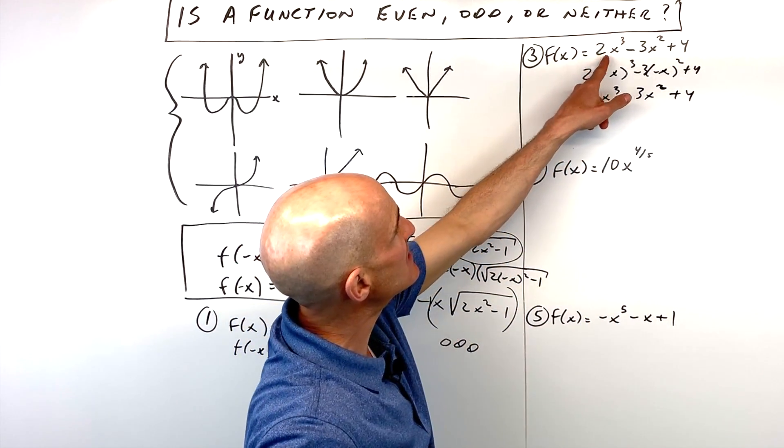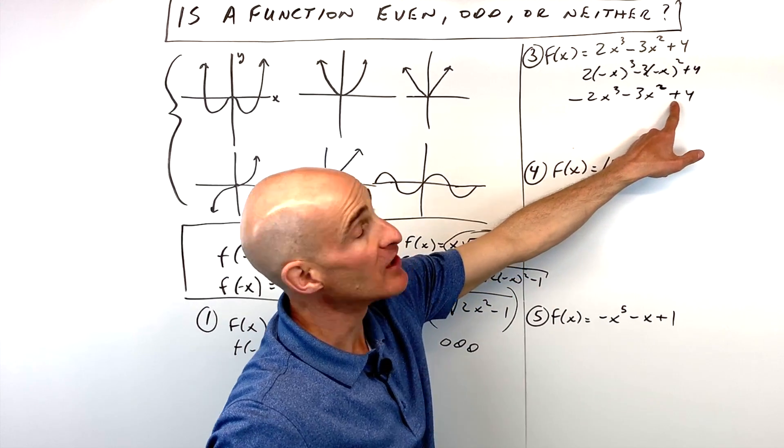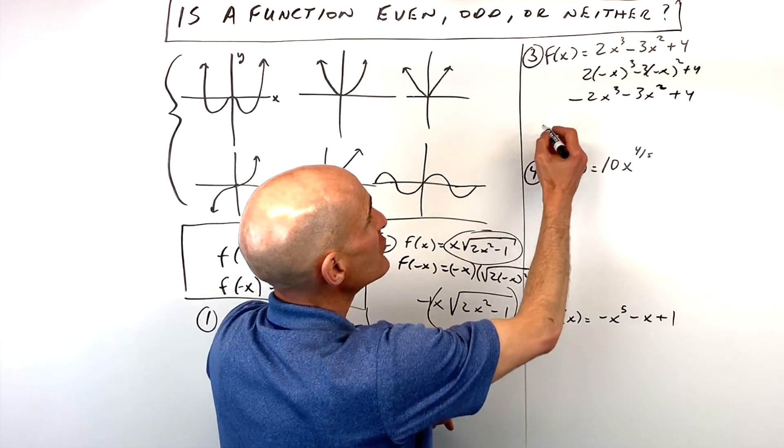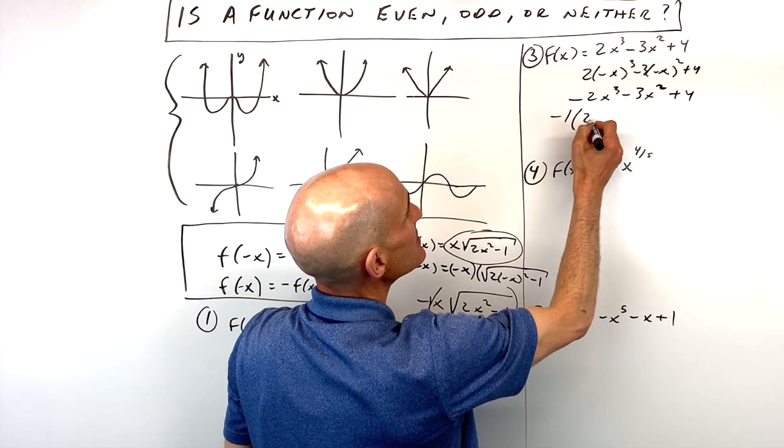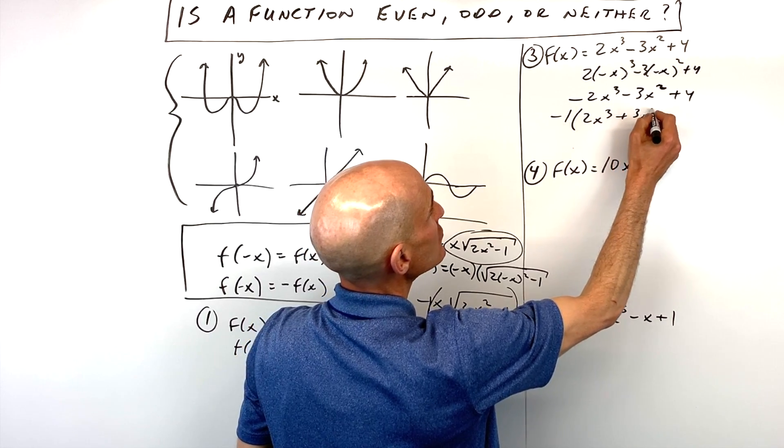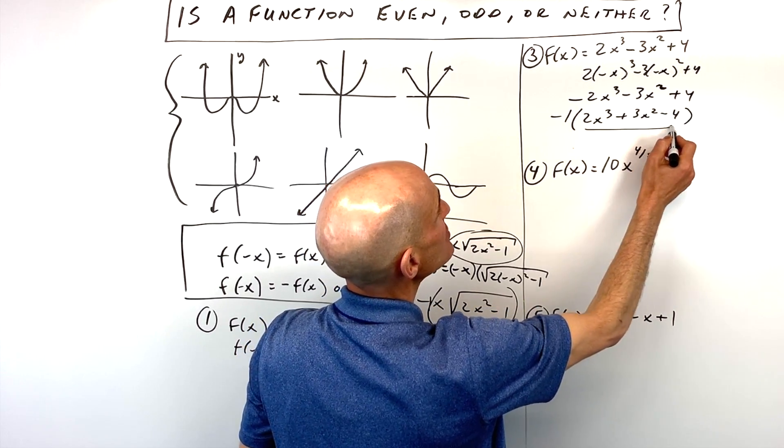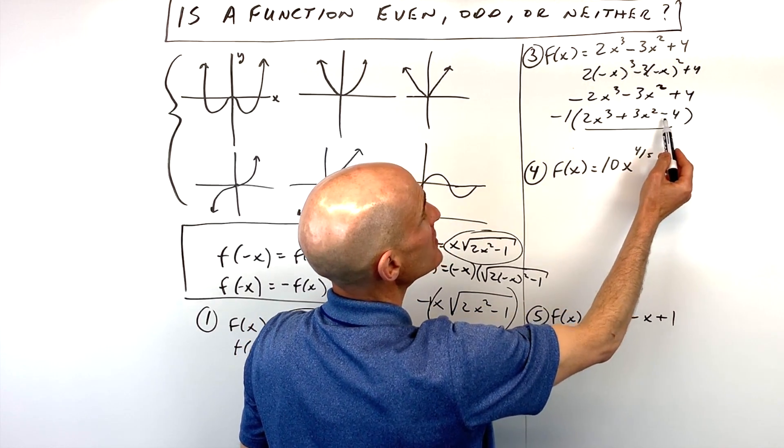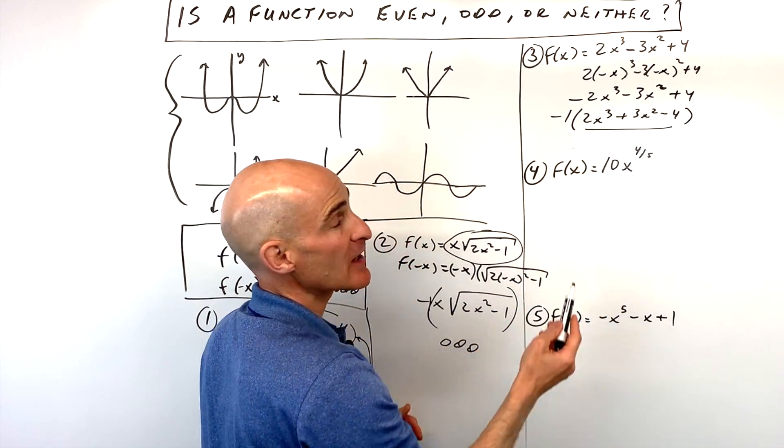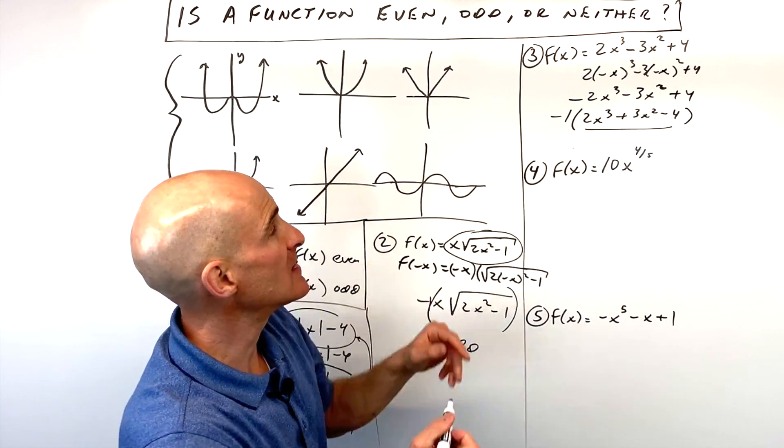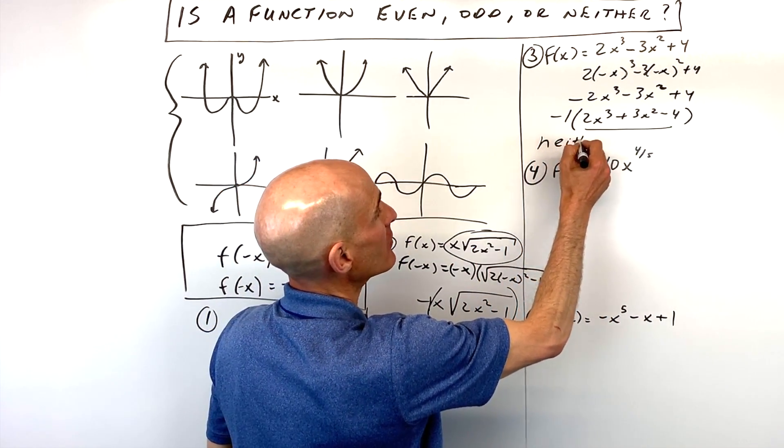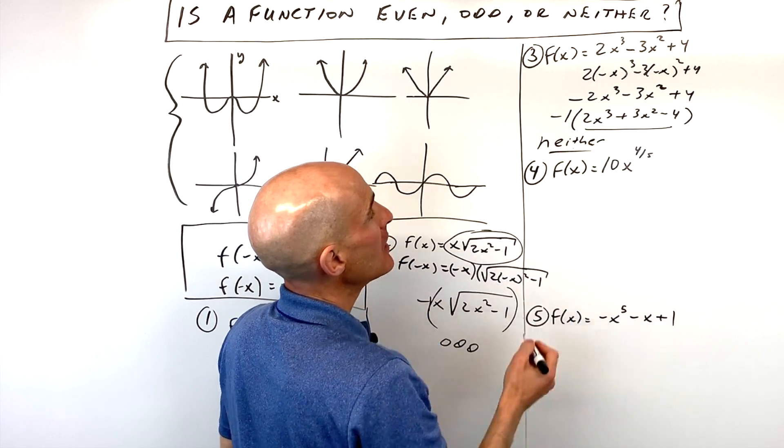When we look at this, is it the same as the original function? Definitely not. If we factor out a negative 1 like this, we get 2x cubed plus 3x squared minus 4. Does this look like the original equation? No, it doesn't. If it did, and it was just multiplied by negative 1, that would be odd. This one is actually neither even or odd.